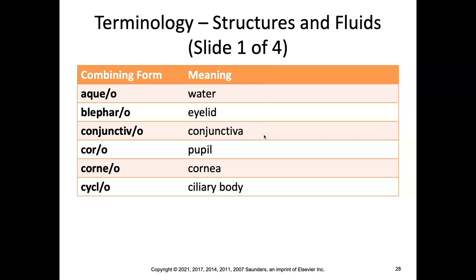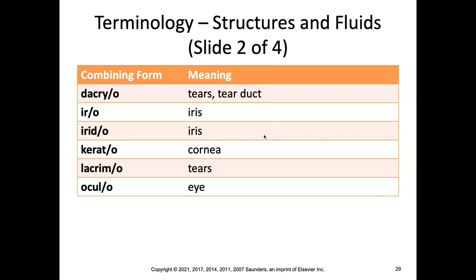Now we're on to combining forms. Our equation is: root plus combining vowel equals combining form. We have aqueo, blepharo, conjunctivo, choro, corneo, cyclo, dacro, iro, irido, kerato, lacrimo, and oculo. Notice that there are two combining forms for iris and two that can mean tears — keep that in mind for your study.